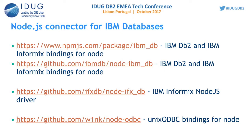The Informix team came with their own Node.js driver. The third link is for the Informix Node.js ODBC driver, called IFX DB. You can use the IBM DB driver or, if you want to exploit specific Informix features, use the IFX DB. There is also an open source ODBC driver for Node.js that supports all ODBC syntaxes and can work with any ODBC driver — the last link is for the node ODBC bindings using UNIX ODBC bindings.